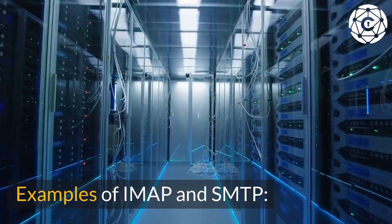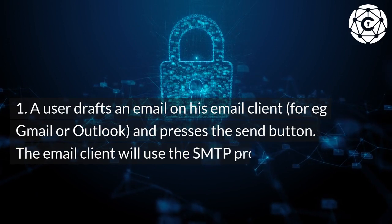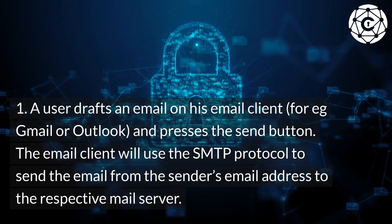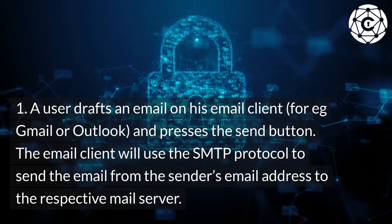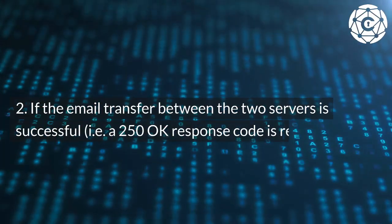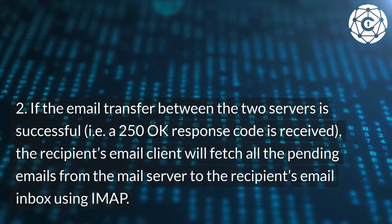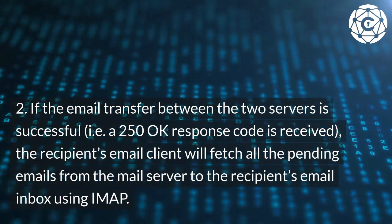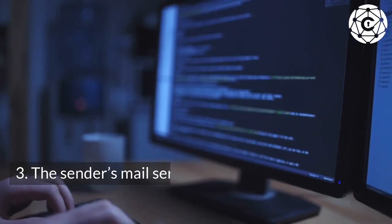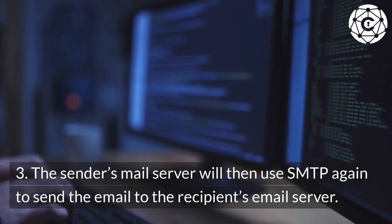Examples of IMAP and SMTP: 1. A user drafts an email on his email client, for example Gmail or Outlook, and presses the send button. The email client will use the SMTP protocol to send the email from the sender's email address to the respective mail server. 2. If the email transfer between the two servers is successful, i.e., a 250 OK response code is received, the recipient's email client will fetch all the pending emails from the mail server to the recipient's email inbox using IMAP. 3. The sender's mail server will then use SMTP again to send the email to the recipient's email server.